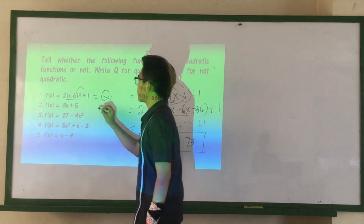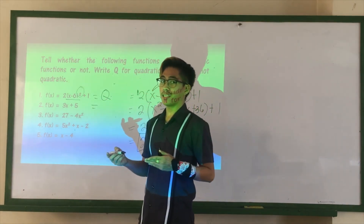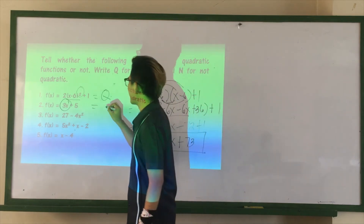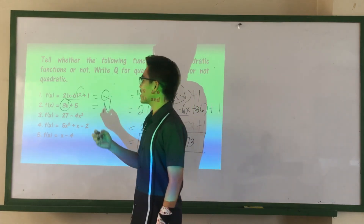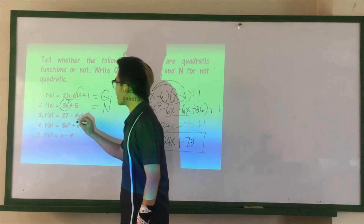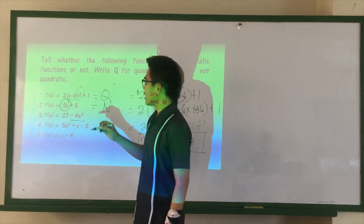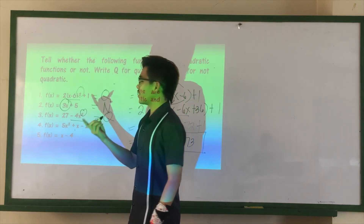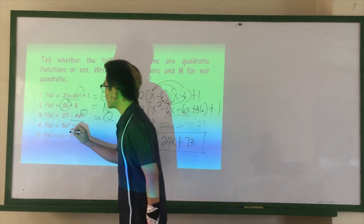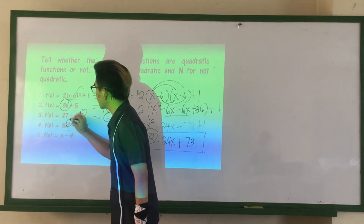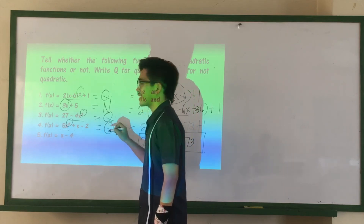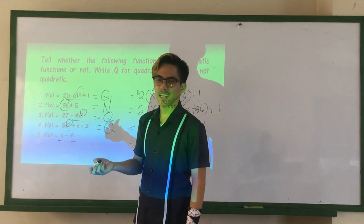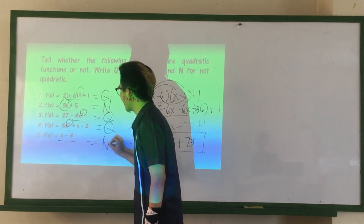The second function — remember the linear function? The first term has exponent only 1, so it's not quadratic. The third function has a second term, negative 4x squared, with exponent 2. Therefore, it is quadratic. The fourth function has a first term with exponent 2. Therefore, it is quadratic again. And the last function is a linear function. Therefore, it is not quadratic.